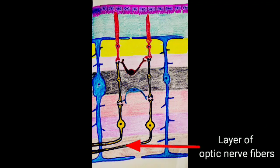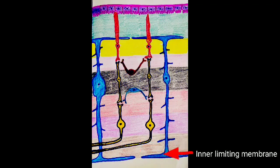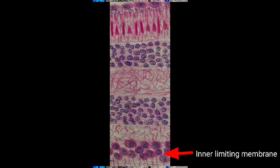Next layer is layer of optic nerve fibers. This layer is formed by the collection of axons of ganglion cells. All the axons of the ganglion cells gather together to form the optic nerve. The last layer is inner limiting membrane layer. This is also formed by the muller cells or the glial cells. This inner limiting membrane separates the retina from the vitreous chamber, that is from the vitreous humor.